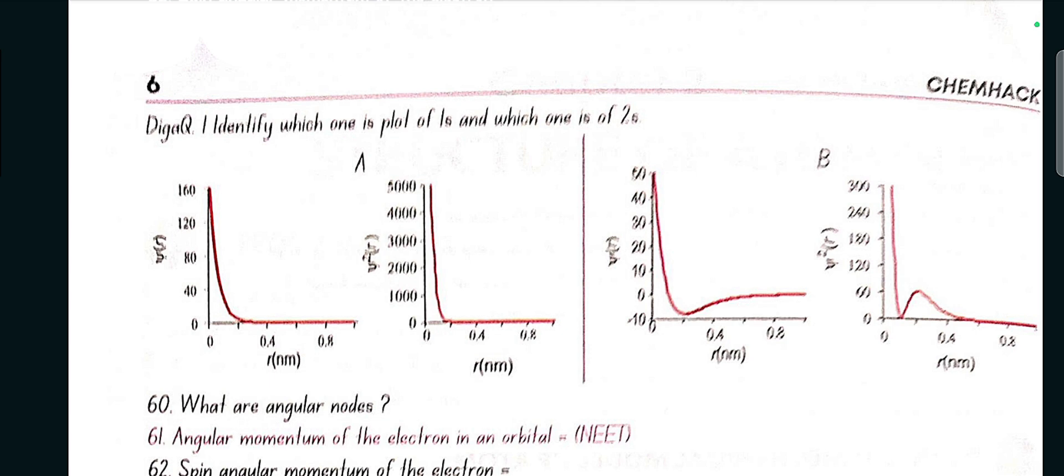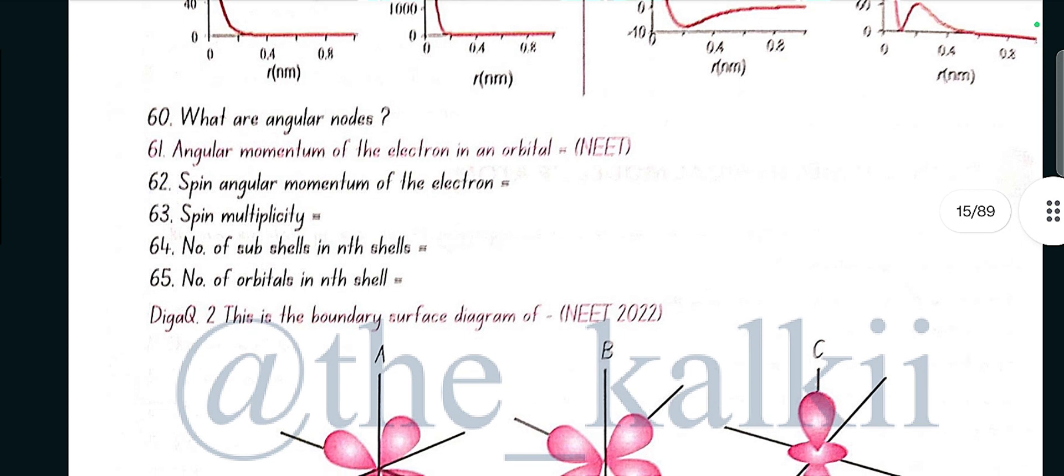So here, a is 1s and b is 2s. What are angular nodes? The nodal planes passing through origin which have zero probability of electrons is angular nodes. Angular momentum of the electron in an orbital is h by 2 pi, l, l plus 1 ka under root. Spin angular momentum of the electron is given by h by 2 pi, s, s plus 1, under root. Spin multiplicity is given by 2s plus 1.